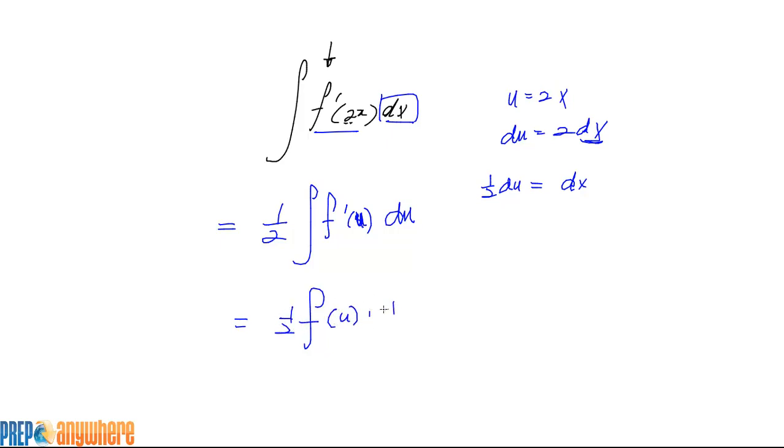So what we get here is half of f at 2x. Let's replace u back with 2x.